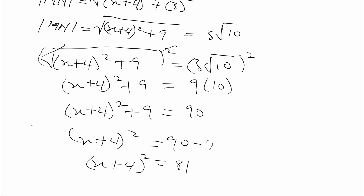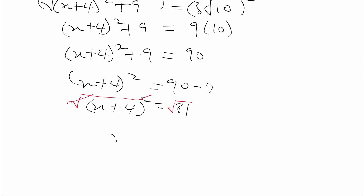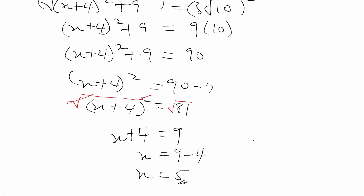So (x plus 4) all squared equals 81. We take the square root of both sides. Squaring cancels the square root and we're left with x plus 4. So x plus 4 is equal to the square root of 81, and the square root of 81 is 9. Now to find x we group like terms, so x will be equal to 9 minus 4, and x is equal to 5. So the value of x is 5.